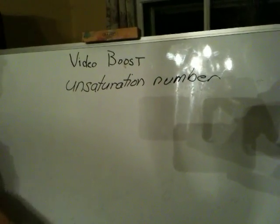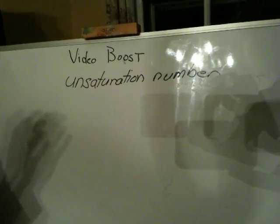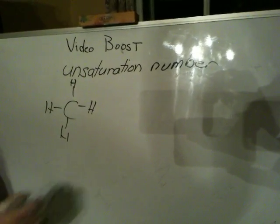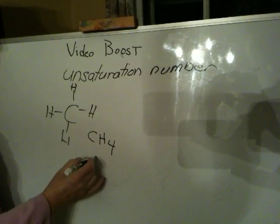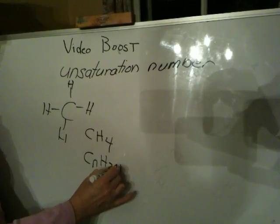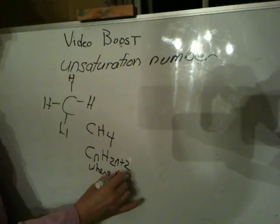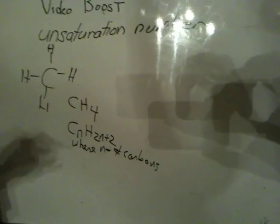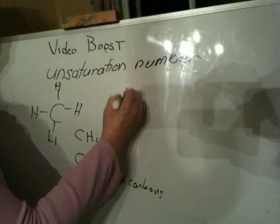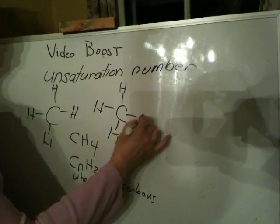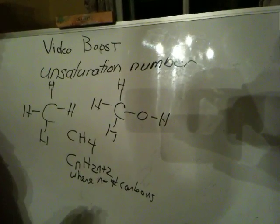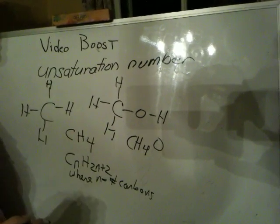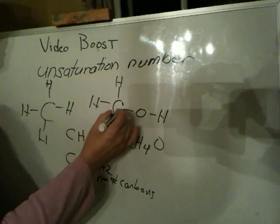We were starting to work on unsaturation on Friday and we're going to continue working on it tomorrow. I want to show you something to think about. Methane is CH4 and it follows the formula CnH2n+2, where N equals the number of carbons — that's really the only formula you need to know. Now think about what happens when you put an oxygen in. If you just add an oxygen to that methane, it is still saturated — it has all single bonds — and the formula is CH4O. So as I was saying in class, oxygen makes no difference in the saturated formula; it's really just like a linker atom.